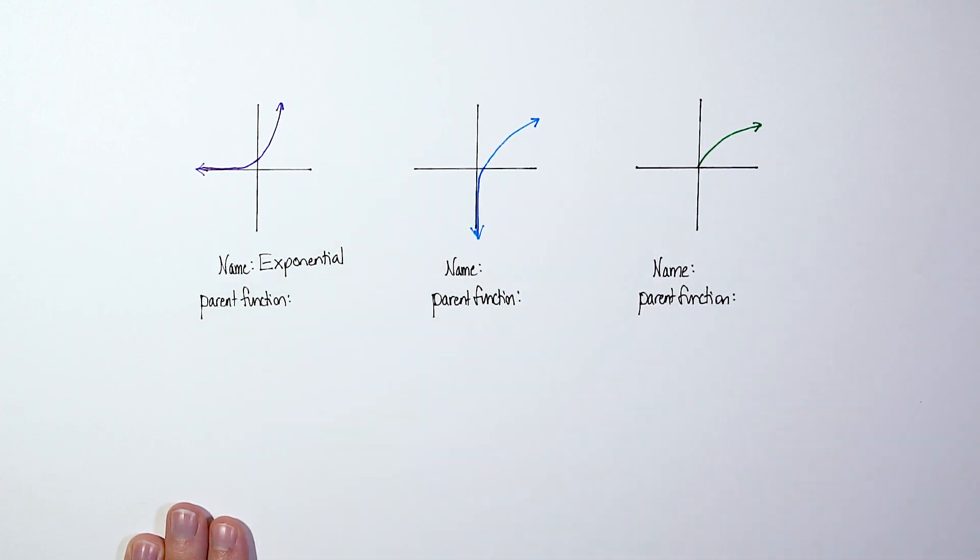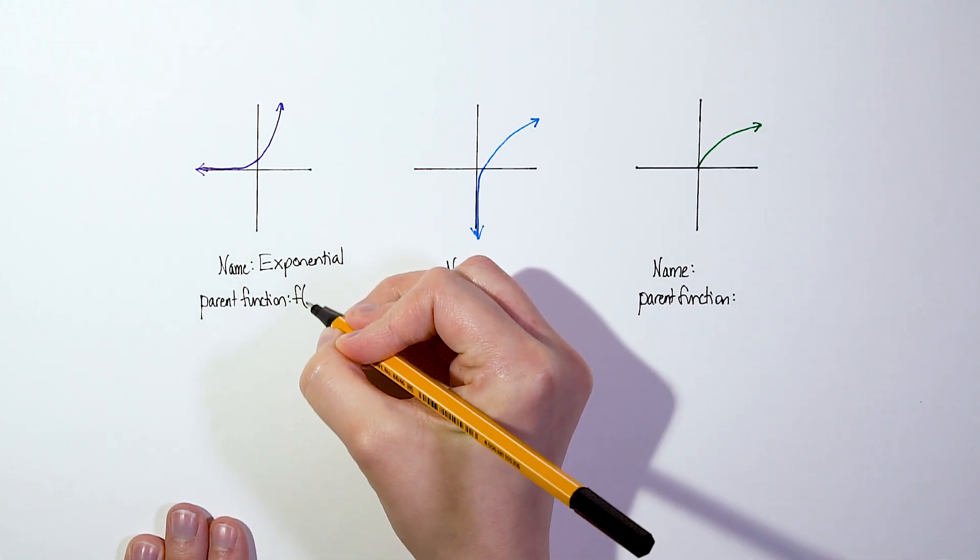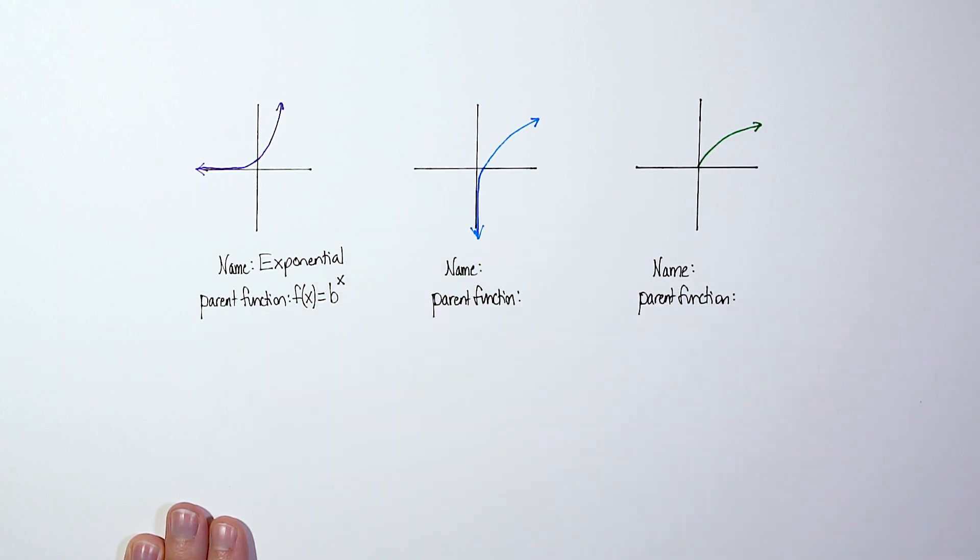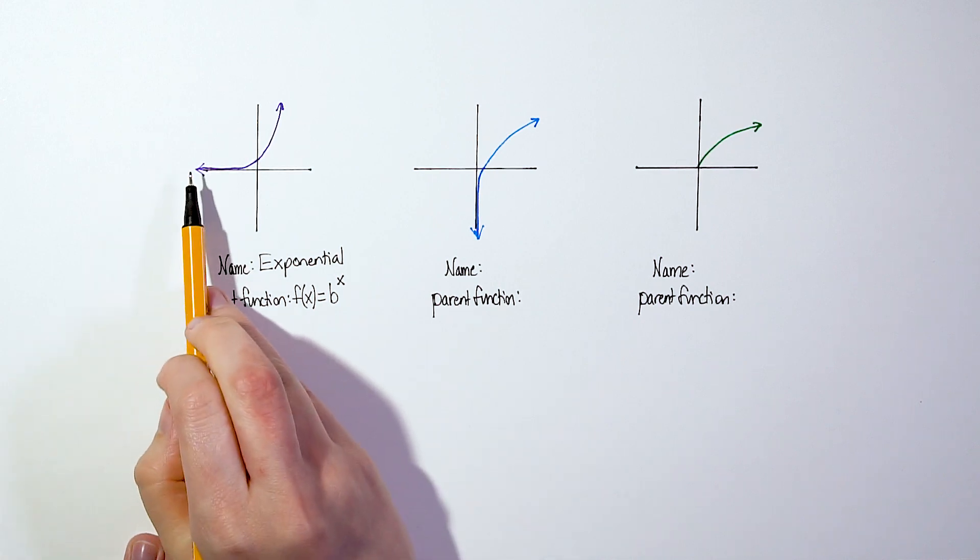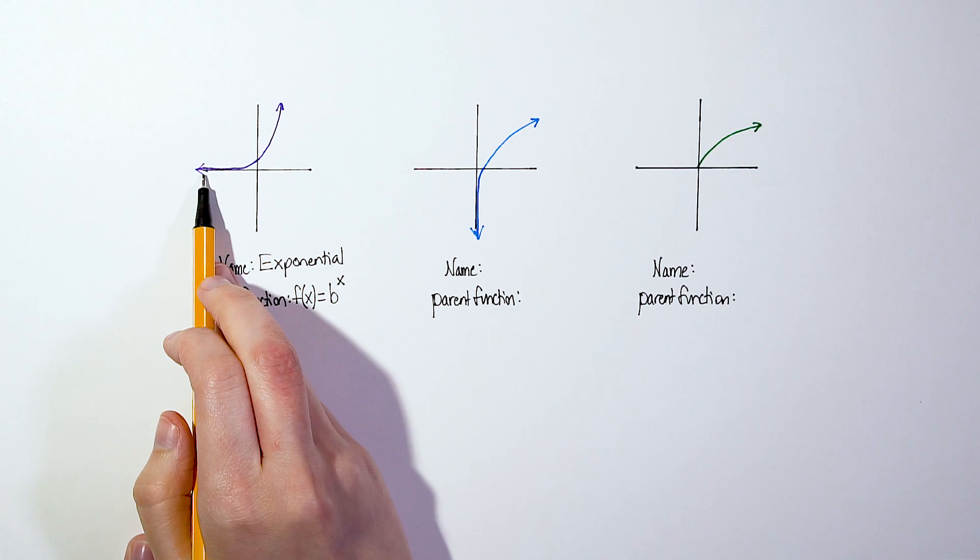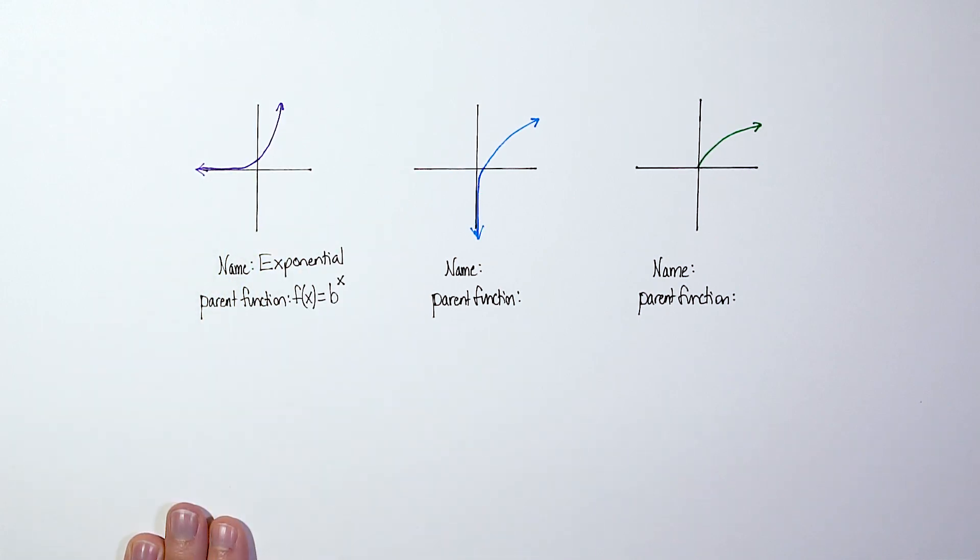That is an exponential function. And the parent function for an exponential would be f(x) = b^x. So again, when you see just a, we call this kind of like a J curve, when you see just a J curve with a horizontal asymptote, you know it's an exponential.